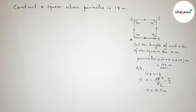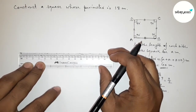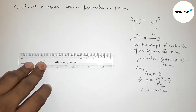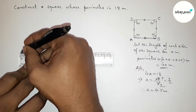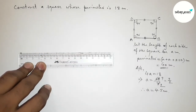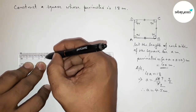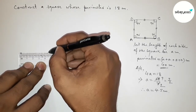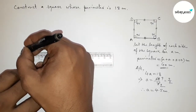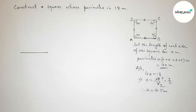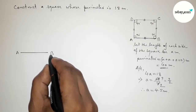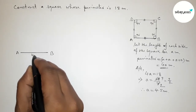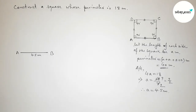So we have to construct a square with each side 4.5 centimeters. First drawing a line segment of length 4.5 centimeters, starting from 0 to 4.5. This is line segment AB of 4.5 centimeters.